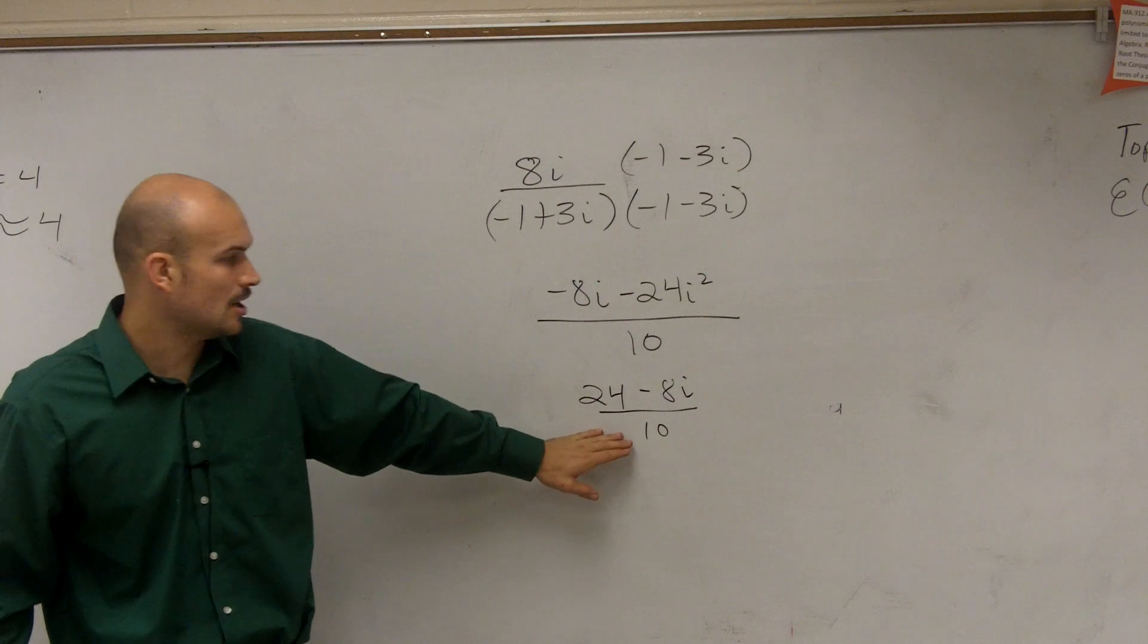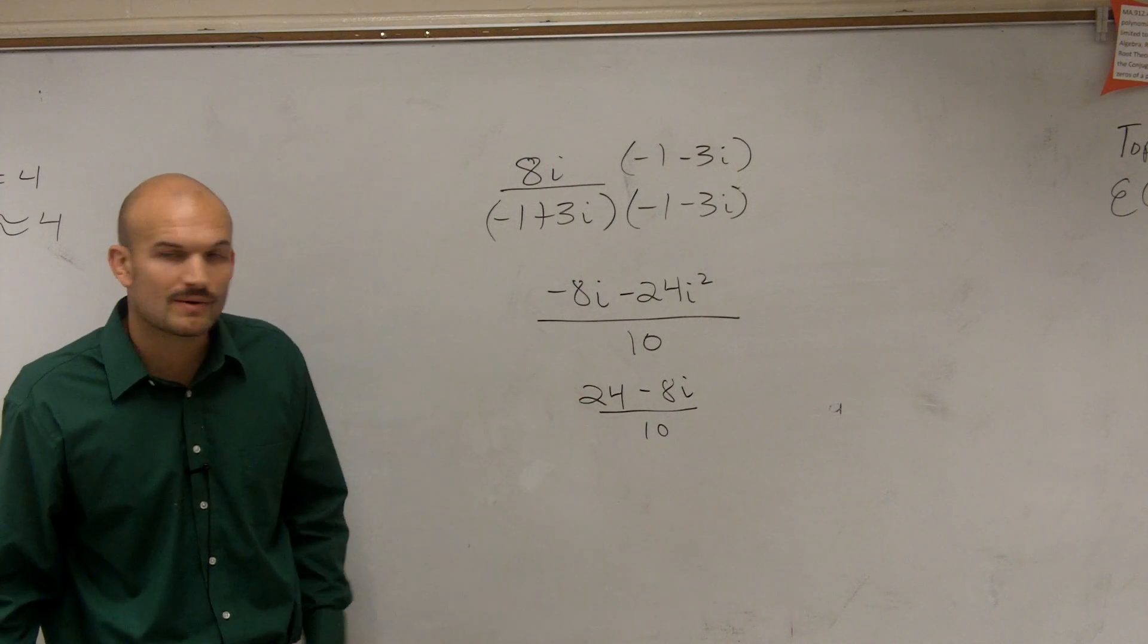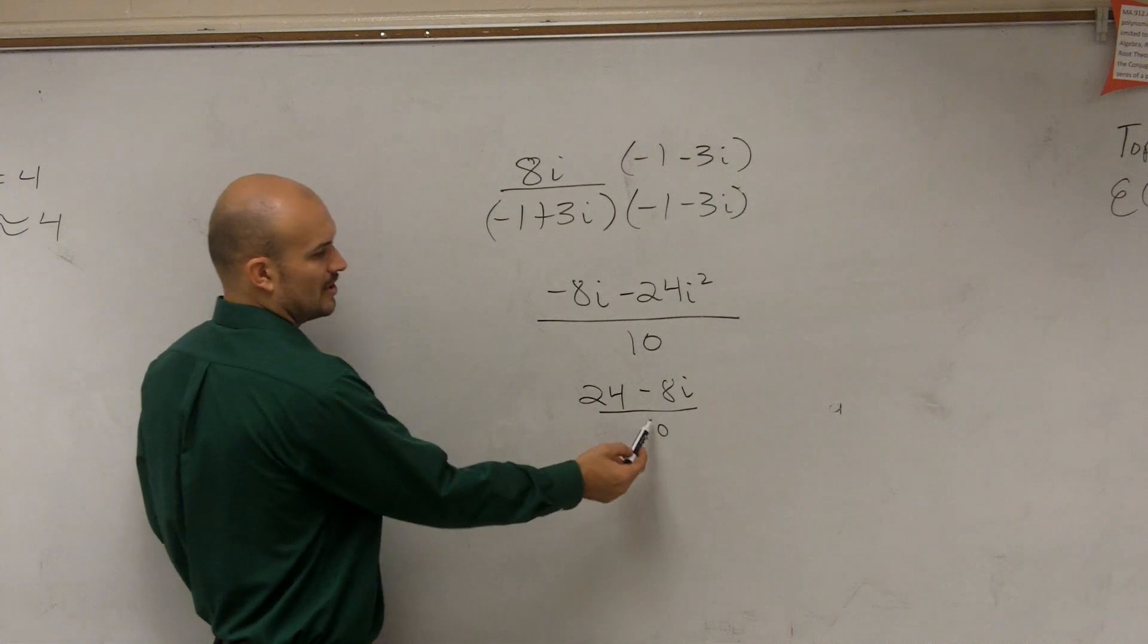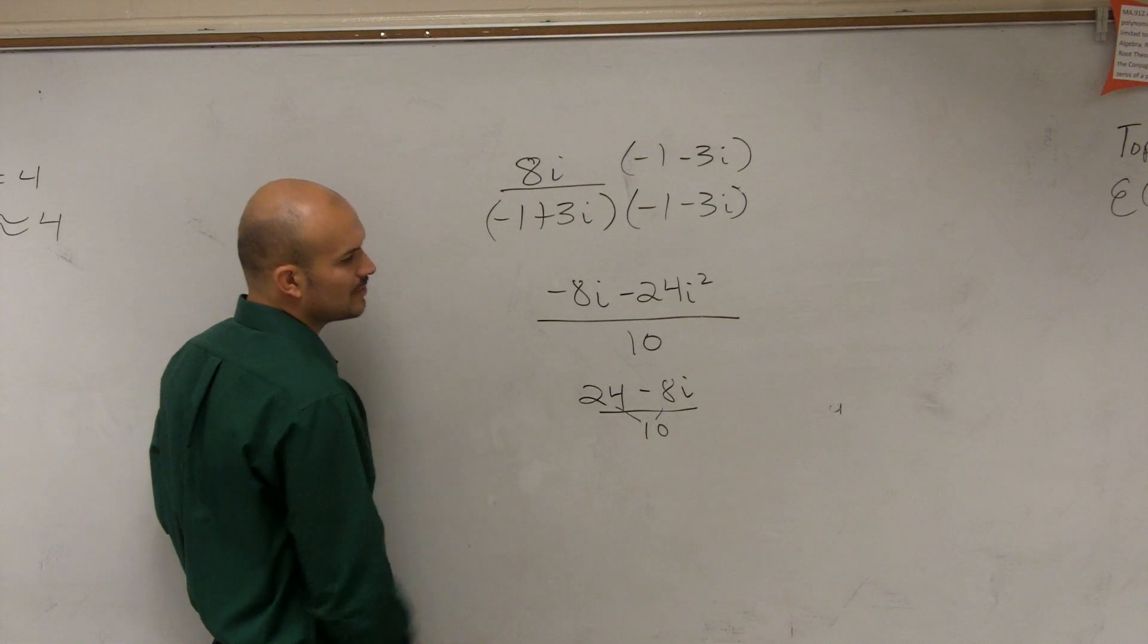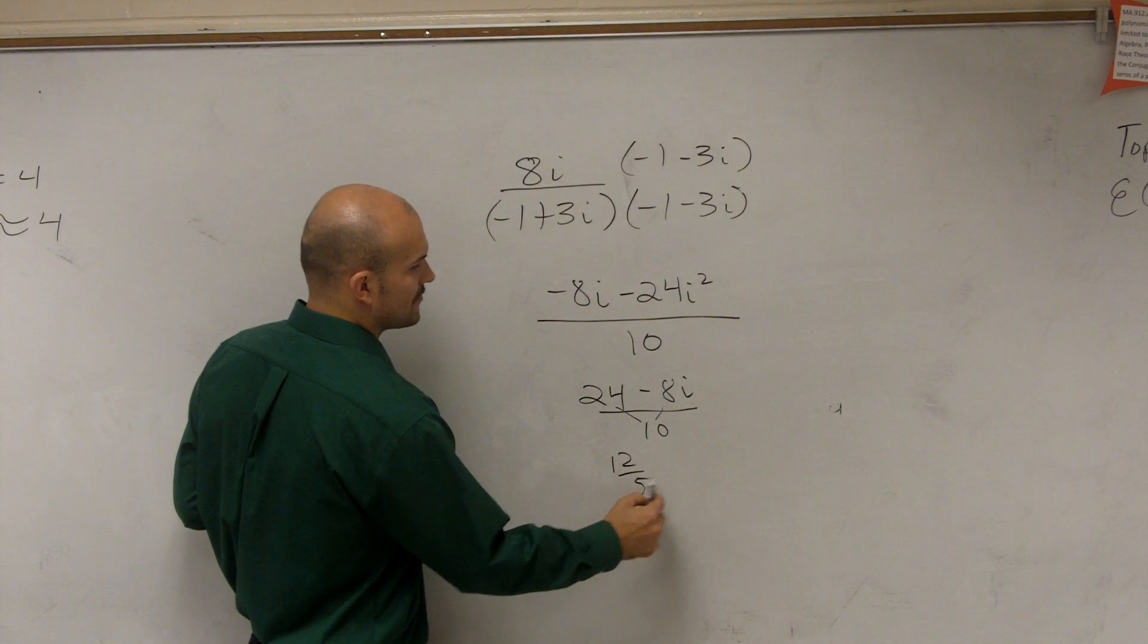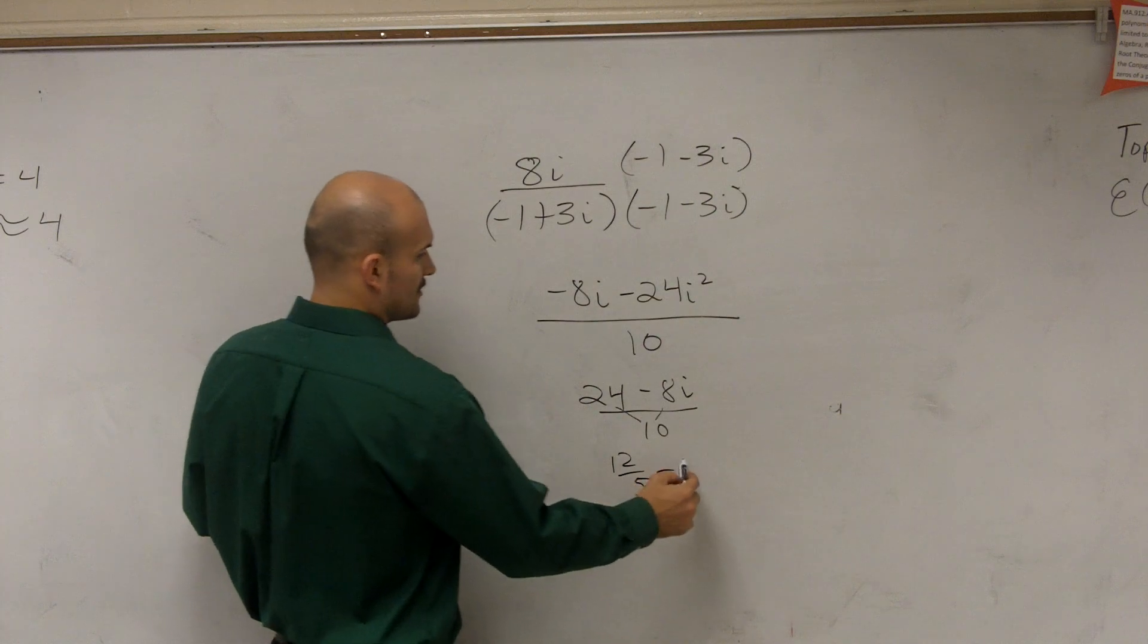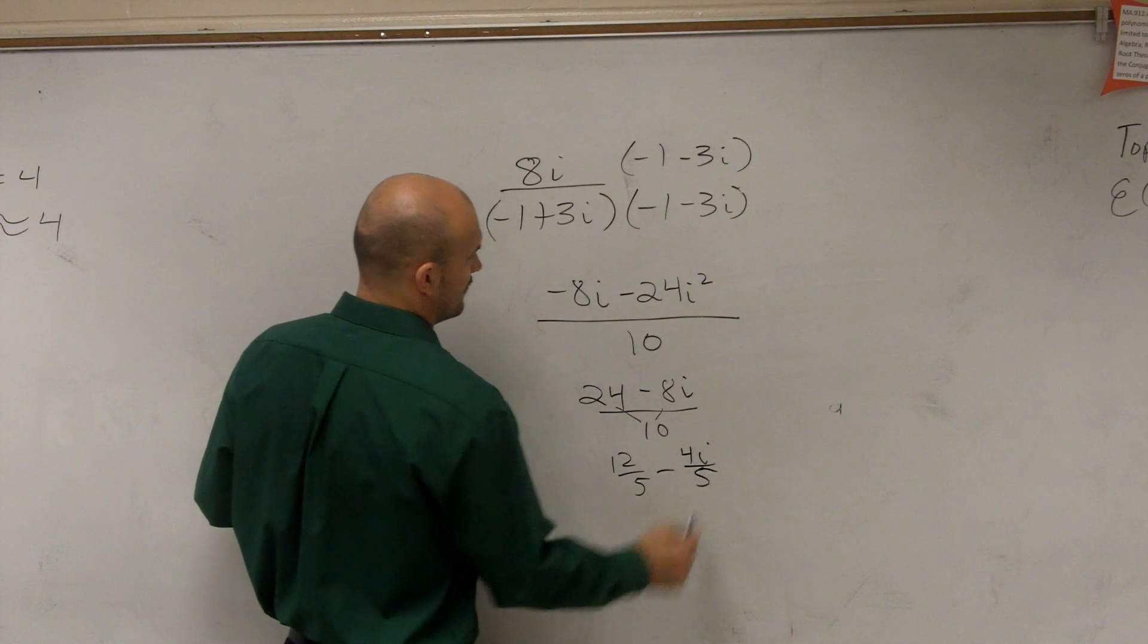And then just remember, I told you guys to always simplify this. Do not leave it in this form. We want to make sure we write it as a complex number. So therefore, I'm going to divide the 10 into both of those terms. By reducing this, you can say you have 12 fifths minus 4 fifths i.